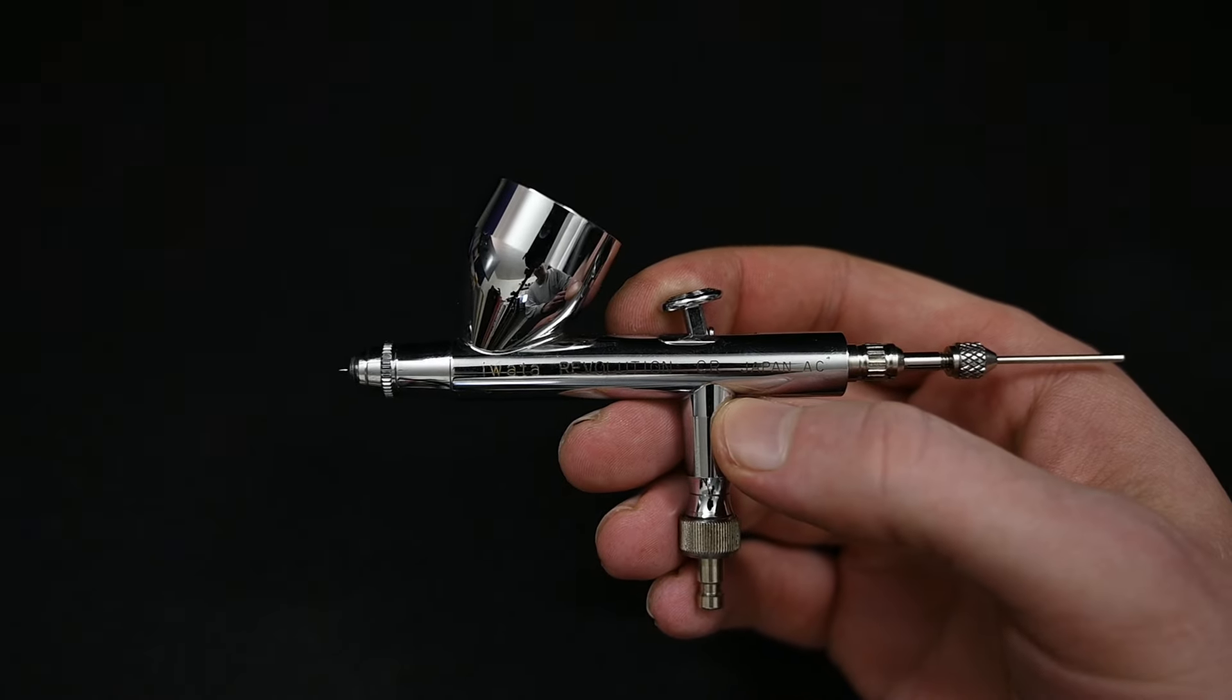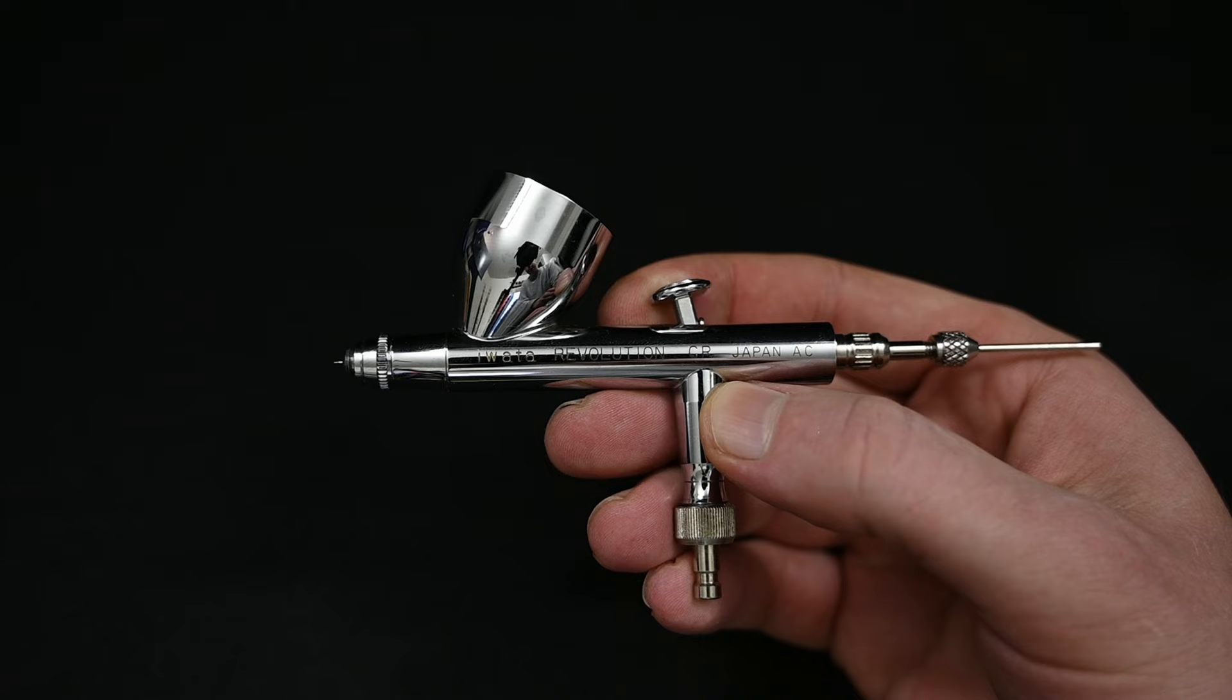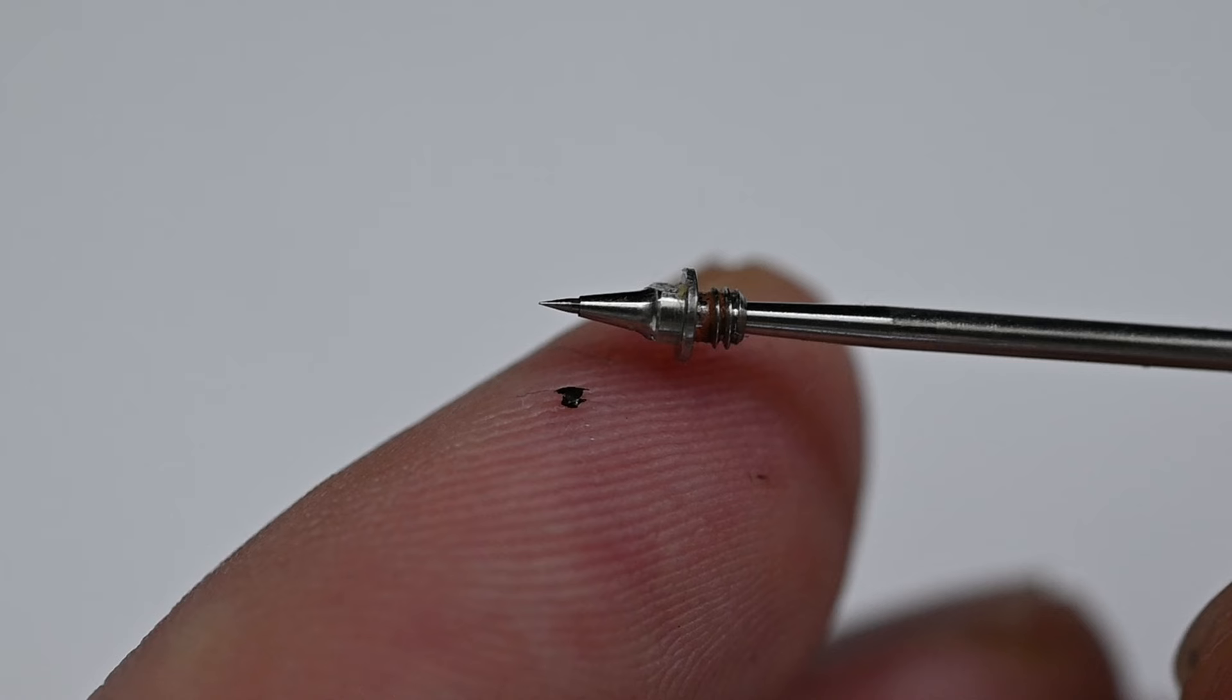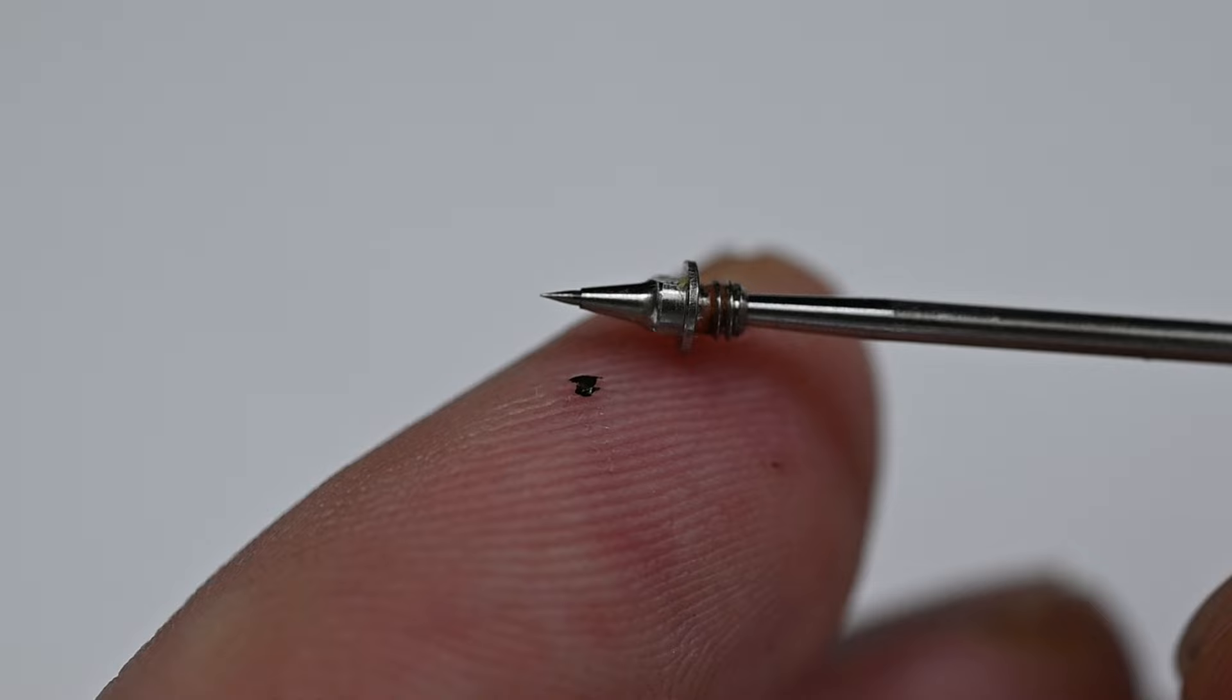This week's video is a short one about a common issue that happens to all airbrushes every now and then. It's about a partial clog of the nozzle. It's not enough for the airbrush to actually stop spraying paint, but it's enough of a clog to kill any detail or control of your airbrush.